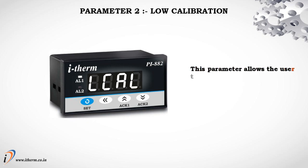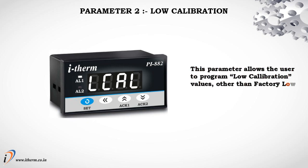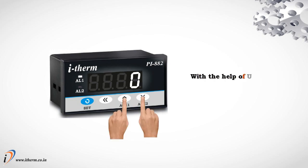Parameter 2: Low Calibration. This parameter allows the user to program low calibration values other than the factory low calibration values for the selected input type. With the help of the Up and Down keys, low calibration can be adjusted.